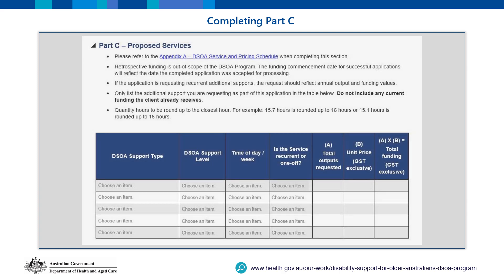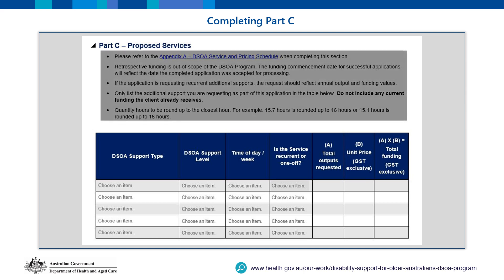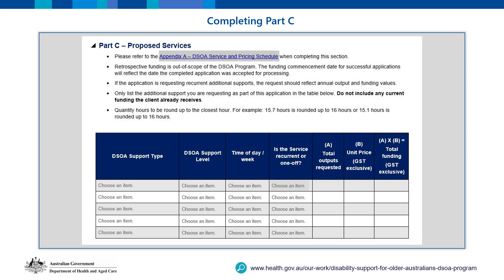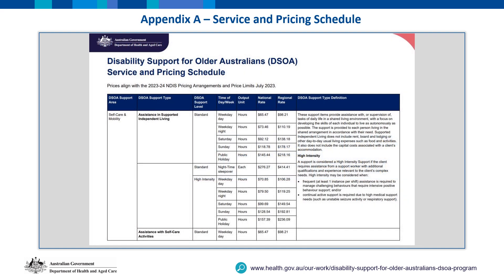In Part C, you must list what additional Decelle Support Types your client requires to meet their change in need. This table should not include your client's current funding. It is important to read the dot points prior to completing the table. Click on the link to Appendix A to open the Decelle Service and Pricing Schedule. The format outlined in Appendix A should be reflected in Part C of the form for each Decelle Support Type listed.